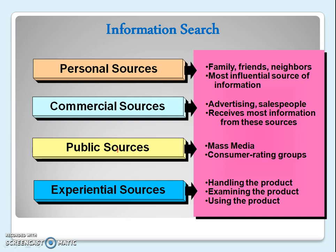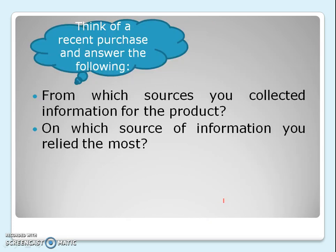The third source is the public source — mass media like consumer rating groups or organizations. These groups rate products on the basis of their merits and demerits. The fourth is the experiential source, where we get information by ourselves — by handling, examining, or using the product — and we come to know about the merits and demerits of the product firsthand.